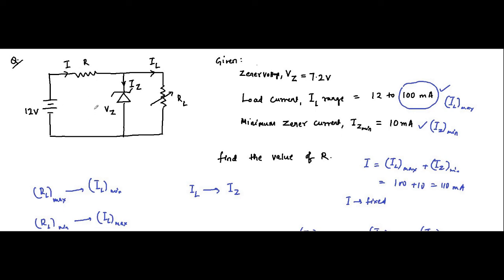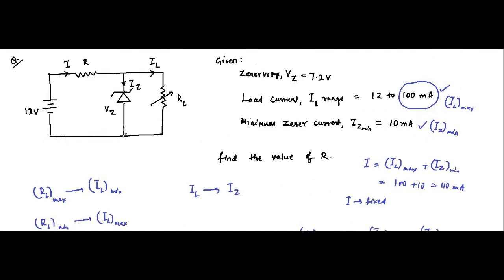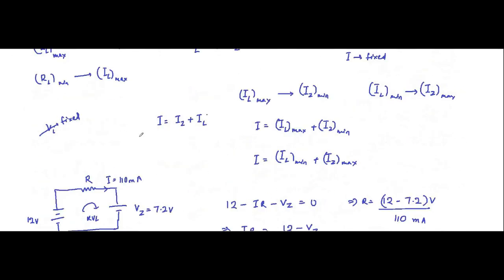These are the concepts you have to understand — how to deal with Zener circuits in different ways when parameters are given differently. First, figure out what type of circuit it is: fixed source with fixed load, variable source with fixed load, or fixed source with variable load. Depending on that, determine the relationships. If the source is variable, the Zener current is directly dependent on the input voltage. So you have to figure it out accordingly.